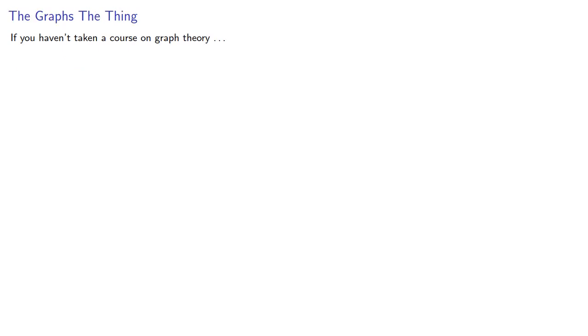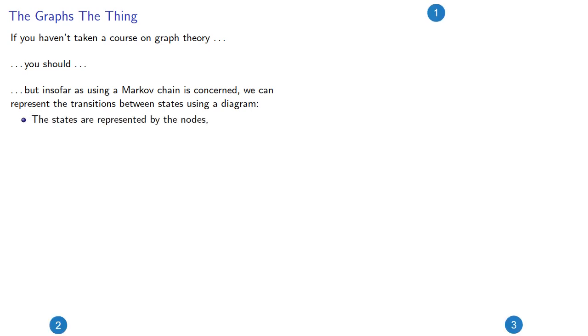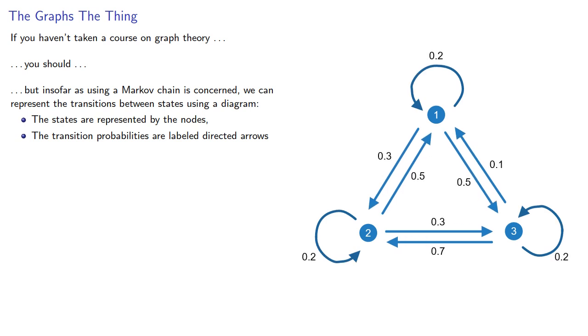If you haven't taken a course on graph theory, you should. But insofar as using a Markov chain is concerned, we can represent the transitions between states using a diagram called a graph. The states are represented by nodes, and the transition probabilities are labeled directed arrows.